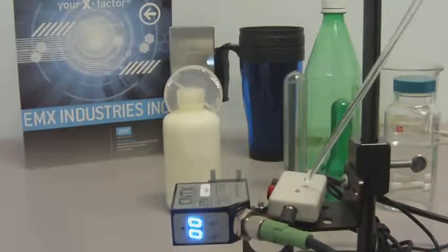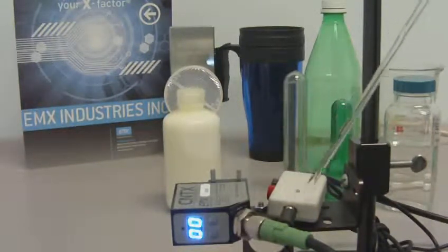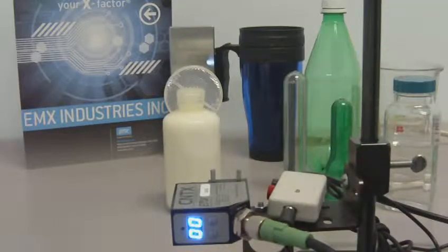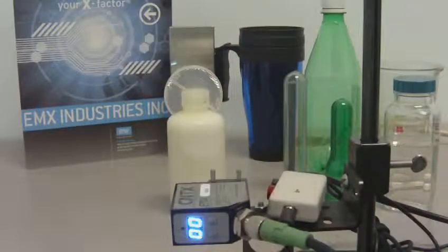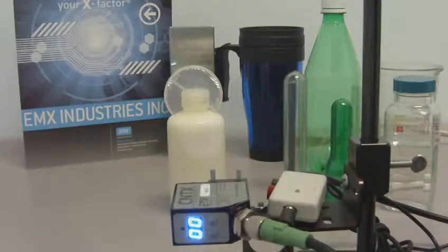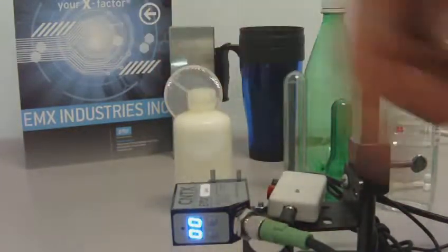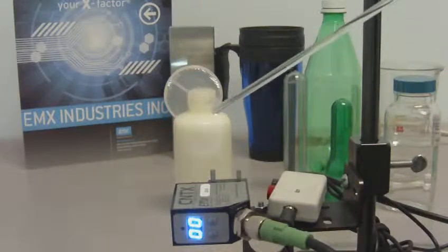The sensor output, NPN or PNP, is connected to an LED on this demo box. As the LED turns on and off, that indicates the sensor is recognizing the presence of the object. That output would typically be connected to a PLC.